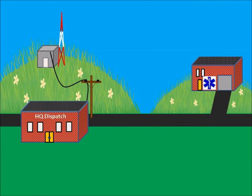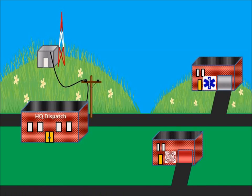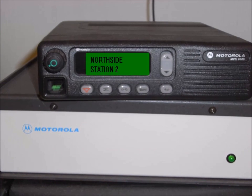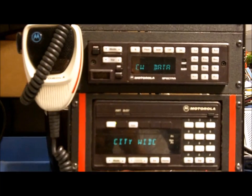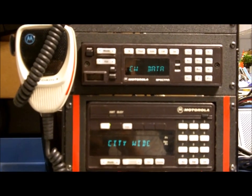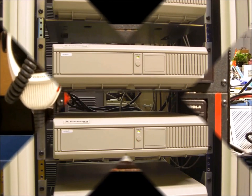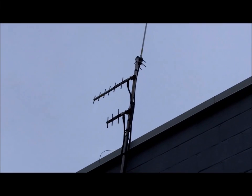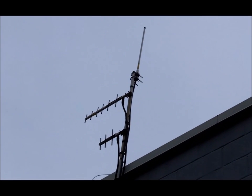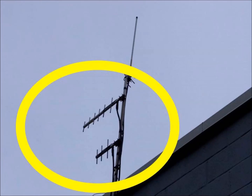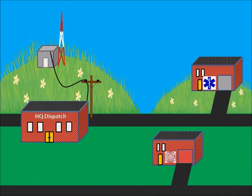If your agency has multiple locations that need to access the system, control stations would be a good choice. These stand-alone stations are effectively desktop subscribers, perhaps a mobile radio using a 12-volt DC power supply. They don't have supervisory capability because they're linked by radio and have no direct connection to the base stations. Because you're talking through the repeater, the antenna can be of higher gain and directional, aimed at the repeater site location.